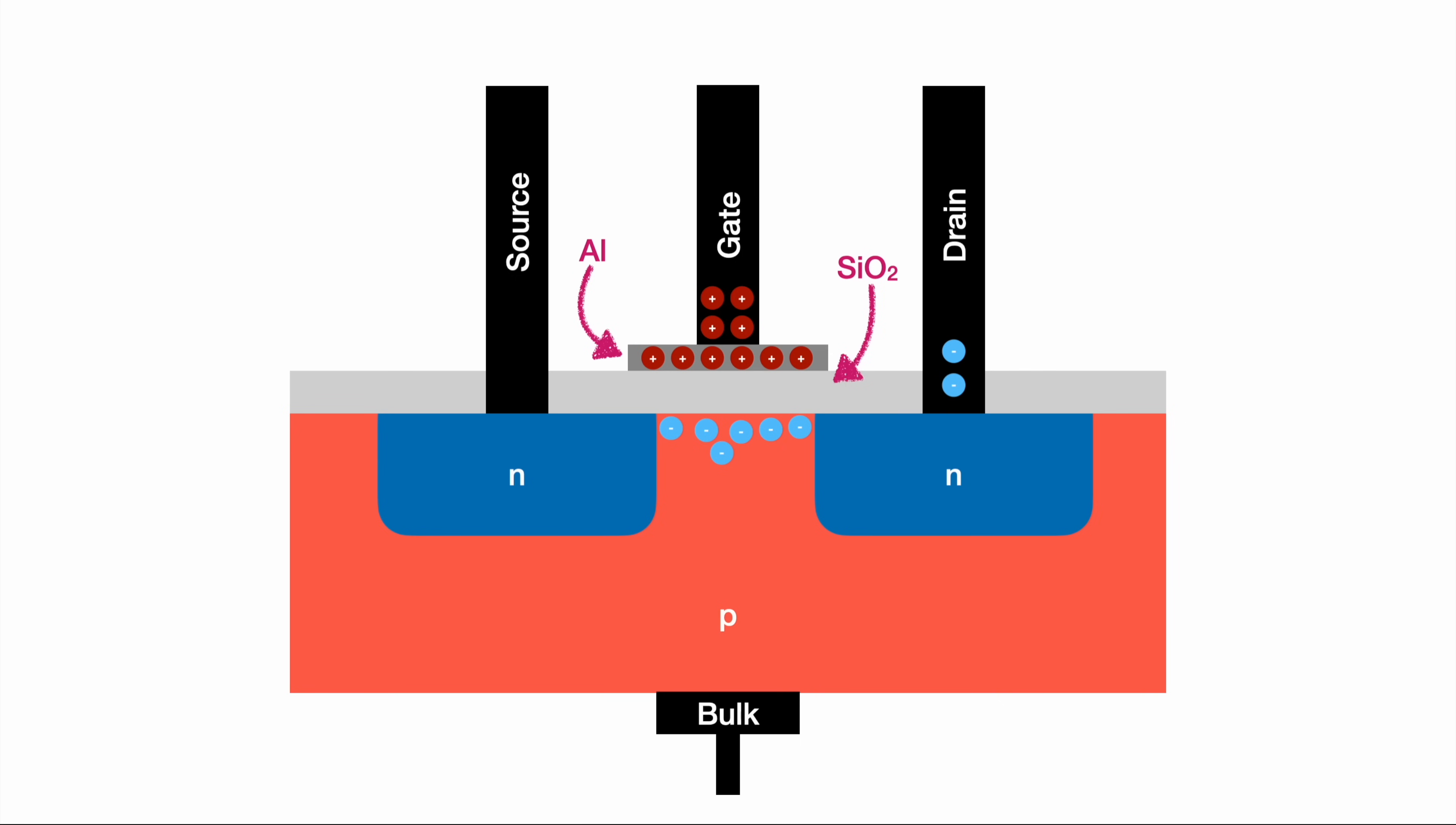The gate closed the connection between the source and the drain, so our electronic switch is engaged and current can flow.